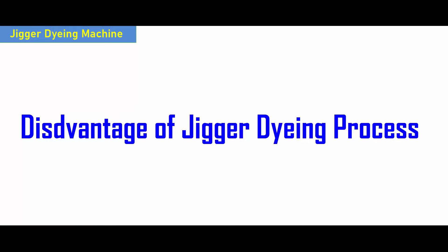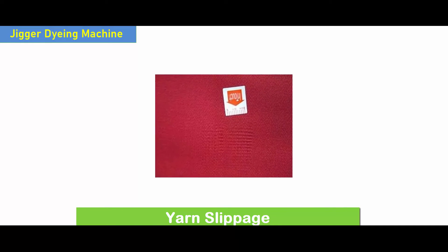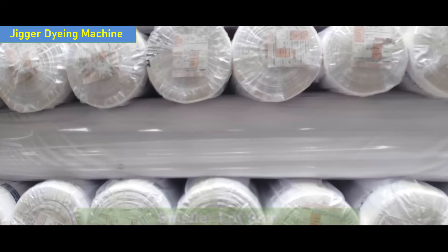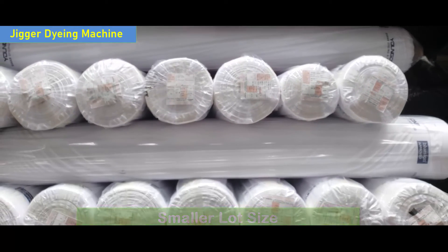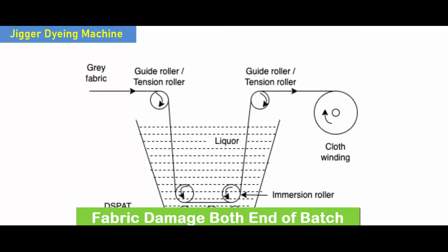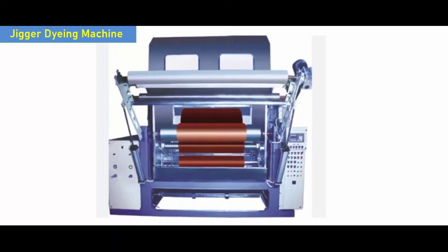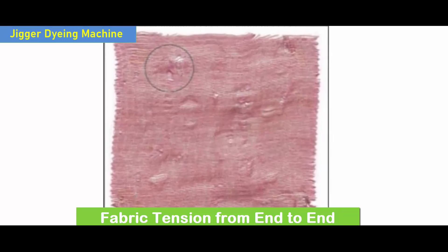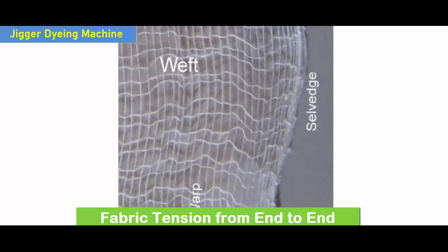The disadvantages of the Jigar dyeing process: When lightweight fabrics are dyed on the Jigar dyeing machine, there are more chances of yarn slippage. The lot size is much smaller than the continuous dyeing process. There is always a chance of some fabric damage at both ends of the roll. Moderate tension is applied on the fabric throughout the process, causing fabric elongation and warp-wise shrinkage to increase.